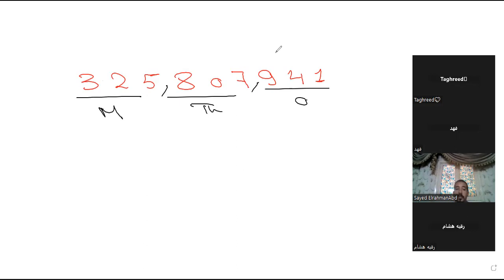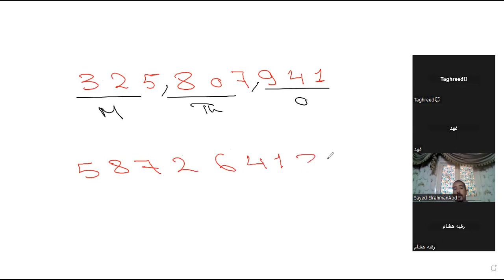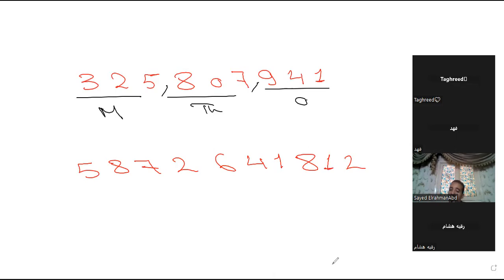Can you help me with 587,264,1812? Five hundred eighty-seven million, two hundred sixty-four thousand, eight hundred and twenty.